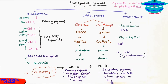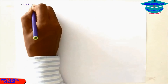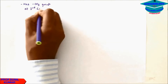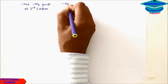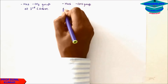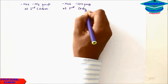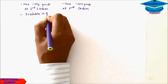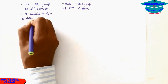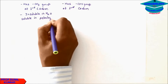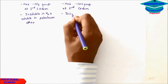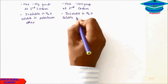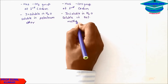Chlorophyll a has a methyl group at the third carbon, while chlorophyll b has an aldehyde group at the third carbon. Chlorophyll a is insoluble in water but soluble in petroleum ether, while chlorophyll b is also insoluble in water but soluble in 90% methanol.